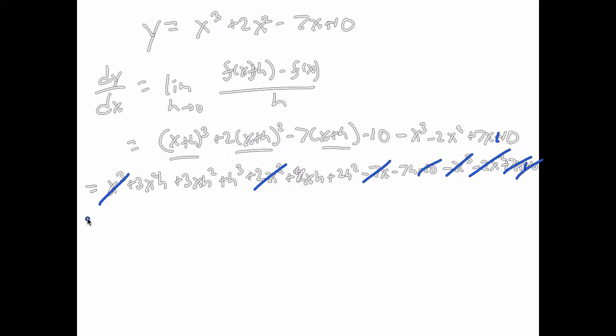So the x³ cancels with x³. The 2x² cancels with the negative 2x². The negative 7x cancels with the 7x. And there should be a plus 10 over here. I apologize. And that cancels with that. Oh, I'm sorry. No, this is a plus 10. That's a minus 10. I definitely apologize. So that cancels with that. Either way, they cancel.